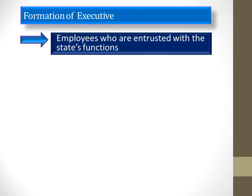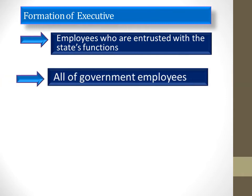Formation of the executive group: all employees who are entrusted with the state's functions — meaning all government employees — are members of the executive group, from the village guards to the head of state. The head of state is our President, and the head of government is our Prime Minister. Both of them are members of this executive group because they are government employees.